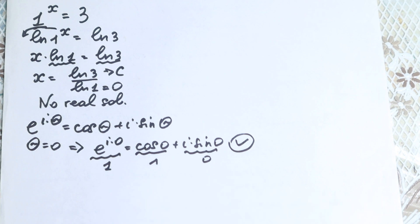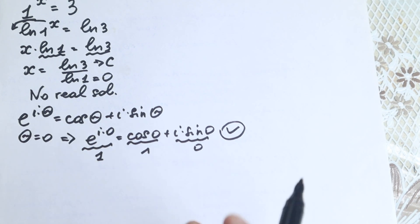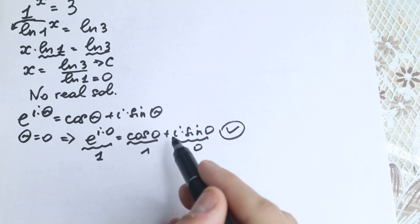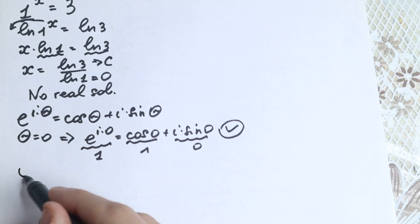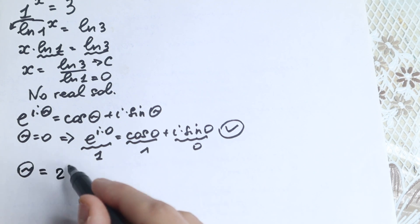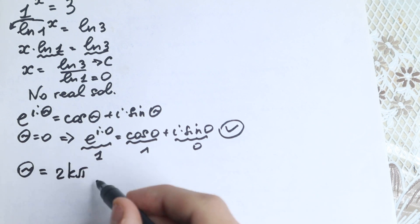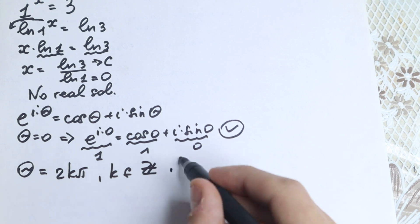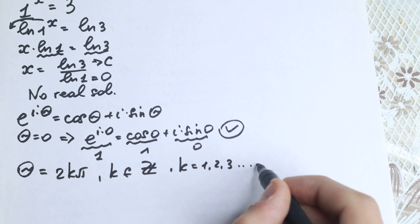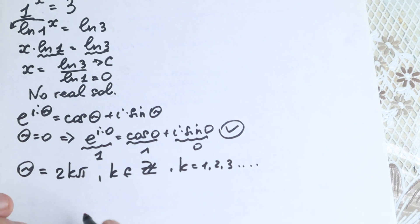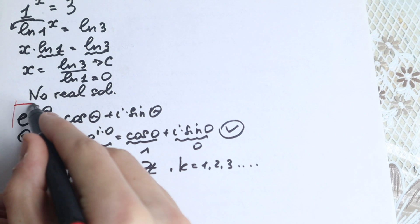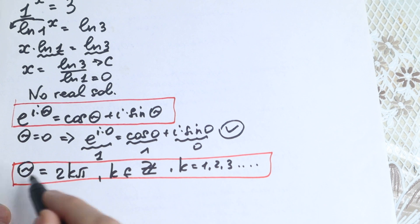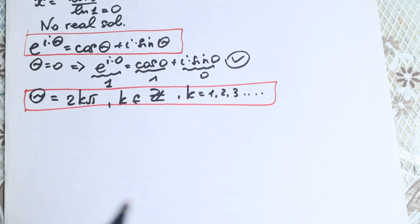Now I want to use a substitution, because we need to write this with a complex variable. Let's work with an angle. We set theta equal to 2k pi, where k is an integer. This is the main important step — first Euler's identity, and second this substitution: theta equals 2k pi.